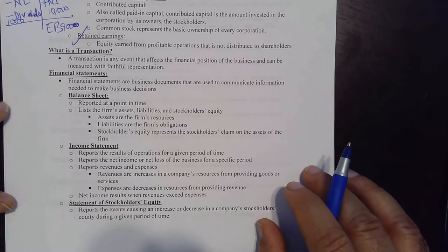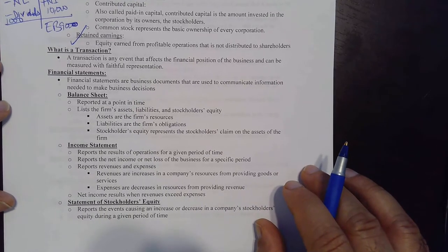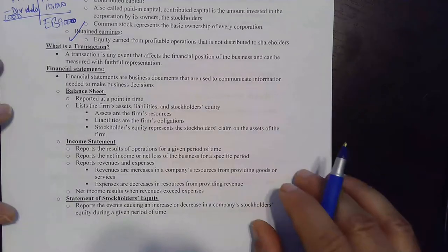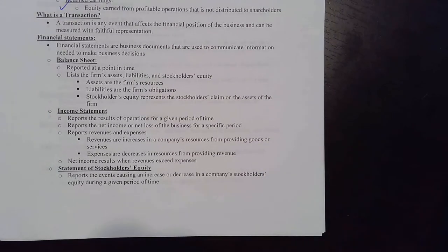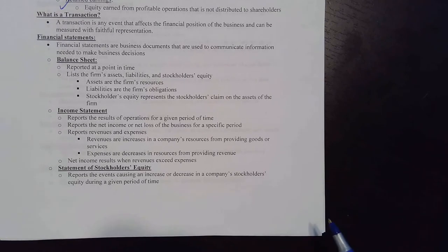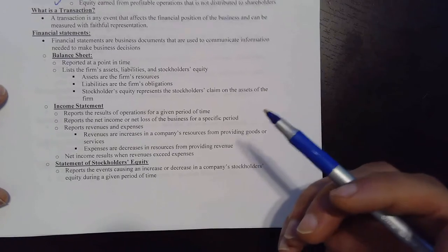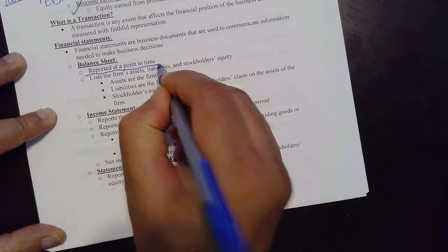There are four financial statements: the income statement, the balance sheet, the statement of retained earnings, the statement of stockholders' equity, and the statement of cash flow. The balance sheet is always reported at a point in time.